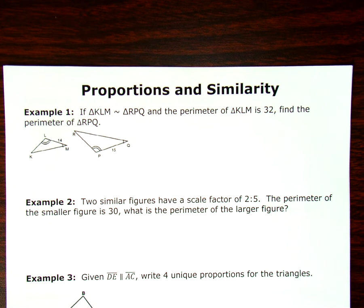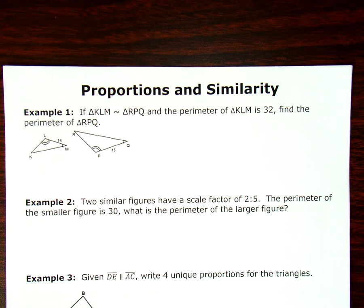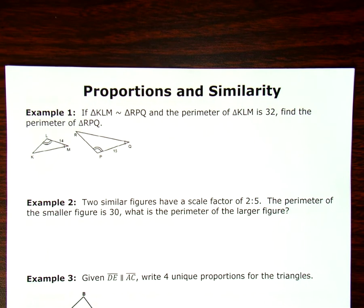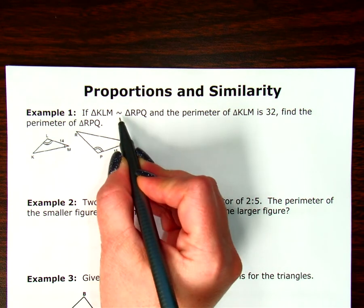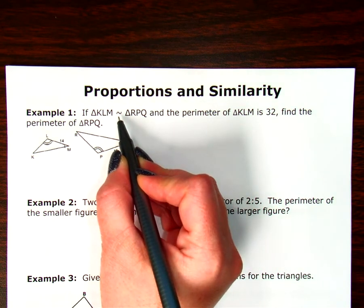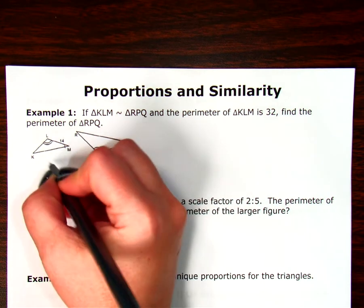My first example says if triangle KLM is similar to triangle RPQ and the perimeter of triangle KLM is 32, find the perimeter of triangle RPQ. So the first thing I'm going to do is label my picture. When I see this similar, I know there's going to be a scale factor. I'm going to compare the first triangle to the second triangle.